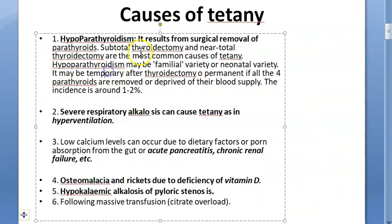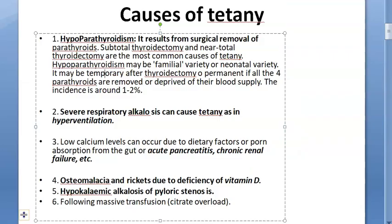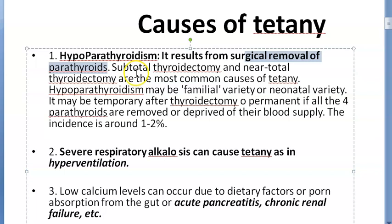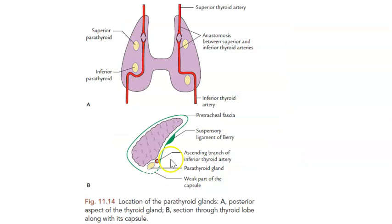Tetany is an important topic in surgery because parathyroid glands may be removed during thyroidectomy or subtotal thyroidectomy. The parathyroid glands are located behind the thyroid gland — four of them on the posterior surface — and they can be inadvertently removed during surgery.